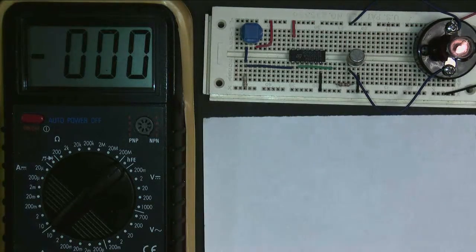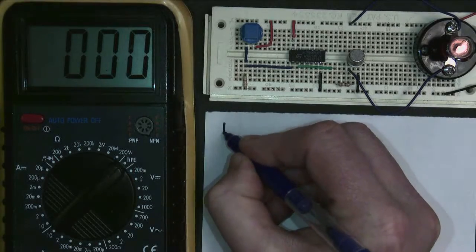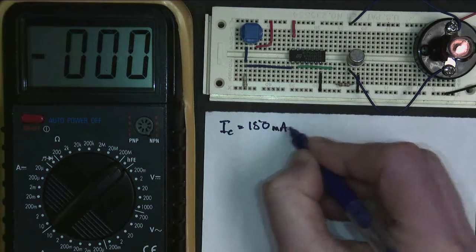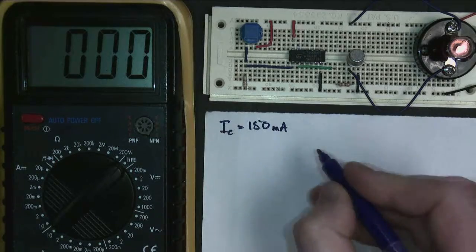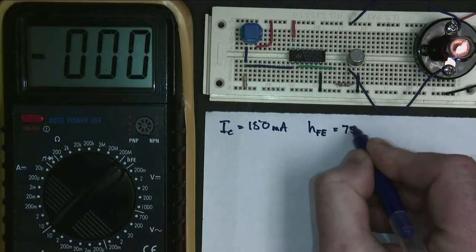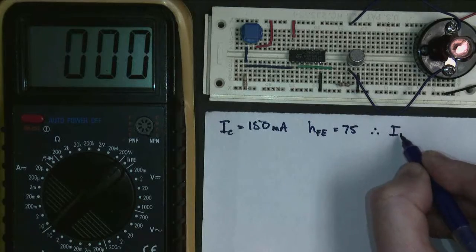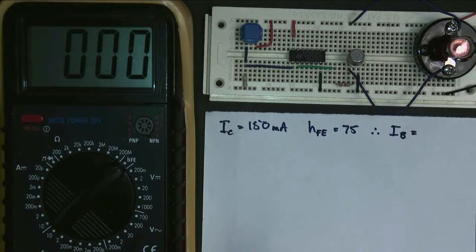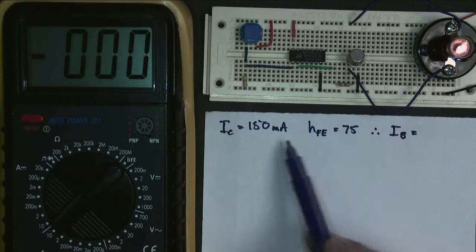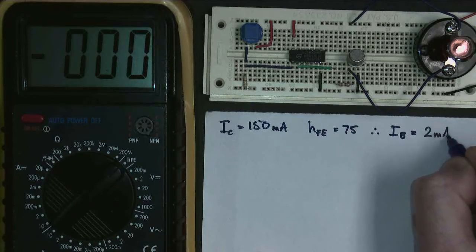And then write all those values down on our notepad. So the current flowing through the bulb, which is the collector current, is 150 milliamps because we measured it. The gain of the transistor is 75 because we measured that. Therefore, the base current is going to be 150 divided by 75. I seriously didn't choose these values on purpose—it just happened that way. But it works out as a very nice 2 milliamps.